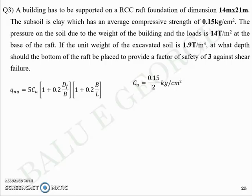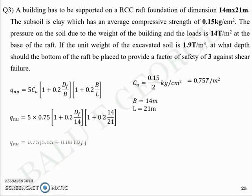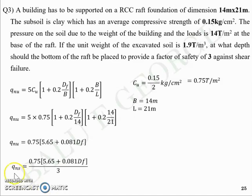So cu = 0.15/2 kg/cm², which we convert to tons per meter square. Breadth B = 14 m and length L = 21 m. Substituting these known values into the equation, Q_NU can be written as 0.75 multiplied by (5.65 + 0.081·DF), where DF is unknown. Q_NS, the safe bearing capacity, is then Q_NU divided by the factor of safety of 3, giving Q_NS = 1.41 + 0.02·DF.